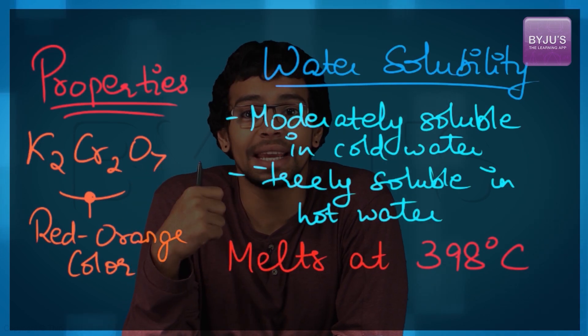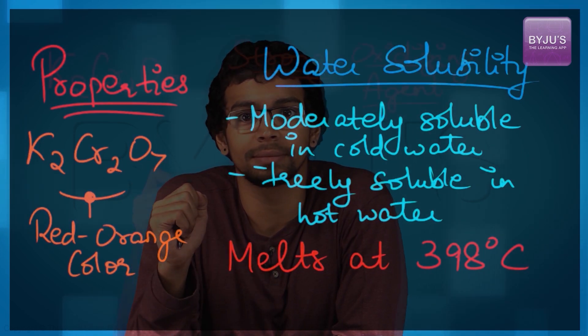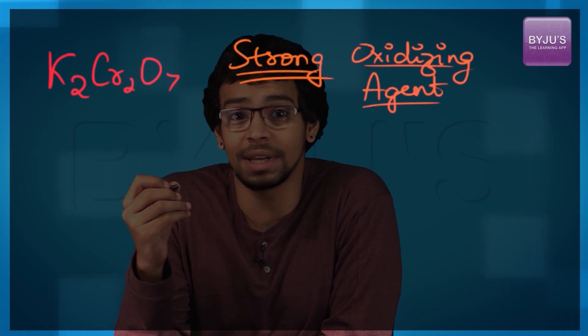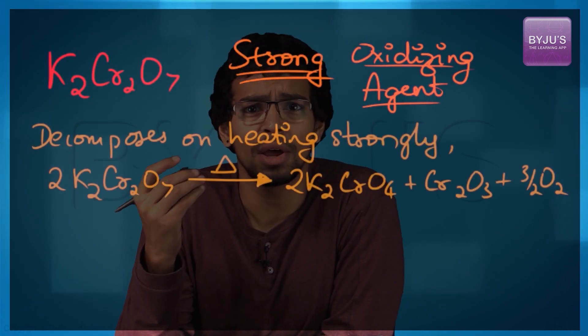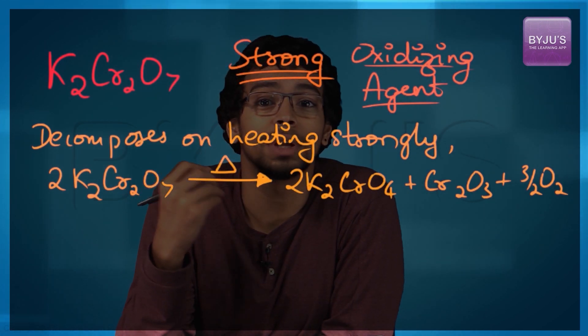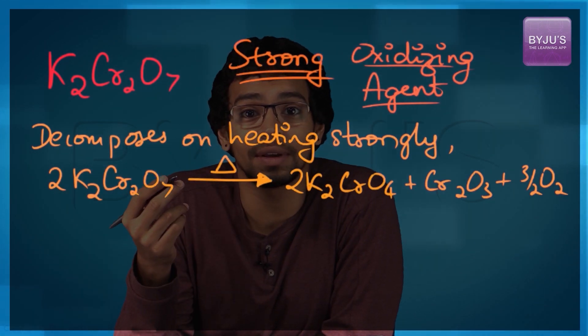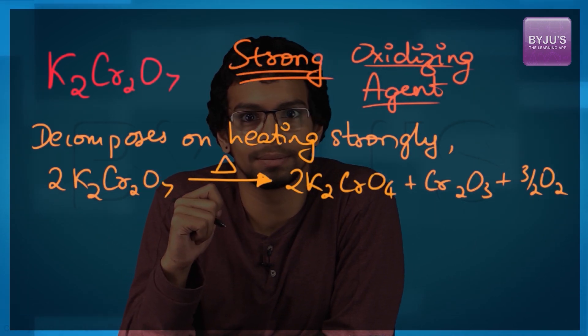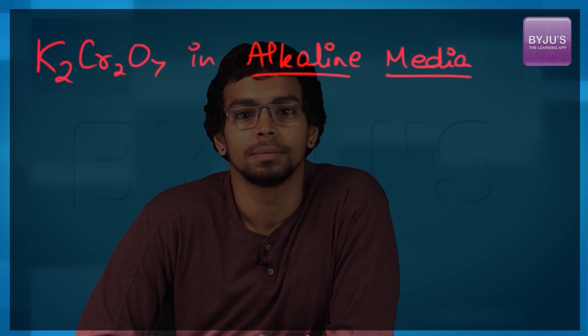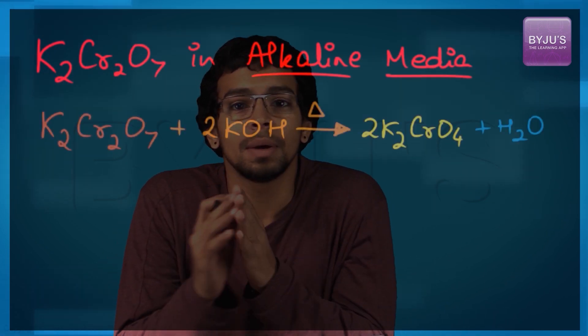It melts at about 398 degrees Celsius. Being a very strong oxidizing agent, on heating strongly potassium dichromate decomposes, giving chromium oxide and liberating oxygen from the system.